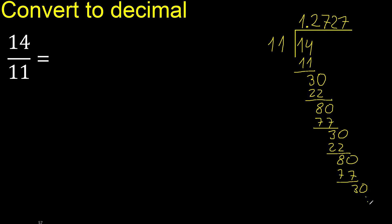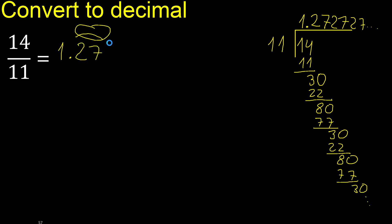Repeat — therefore 27, 27 repeat. After the point, 27 27 repeating — like this. So the answer is 1.27 repeating. Finish.